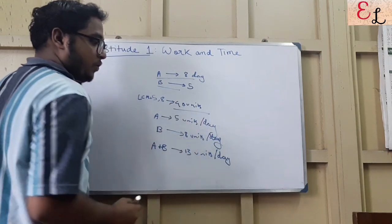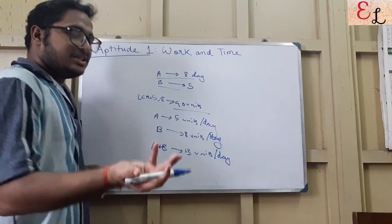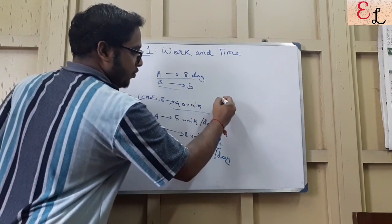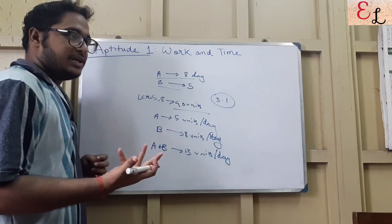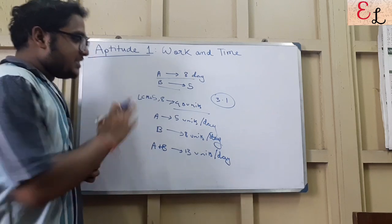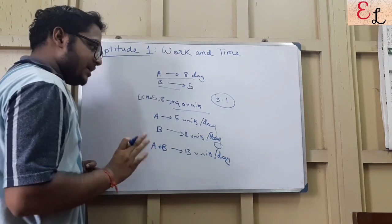How many units of work is to be done? 40 units. So 40 divided by 13, that is something just greater than 3, so it is 3.1. It will take more than 3 days, just more than 3 days, so around 4 days or something like that.